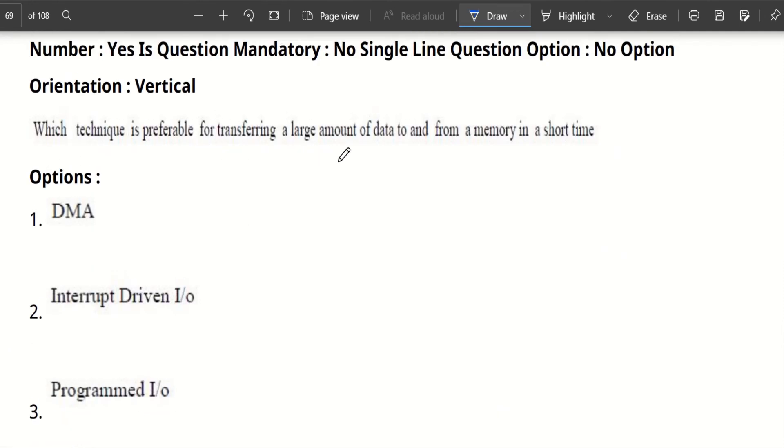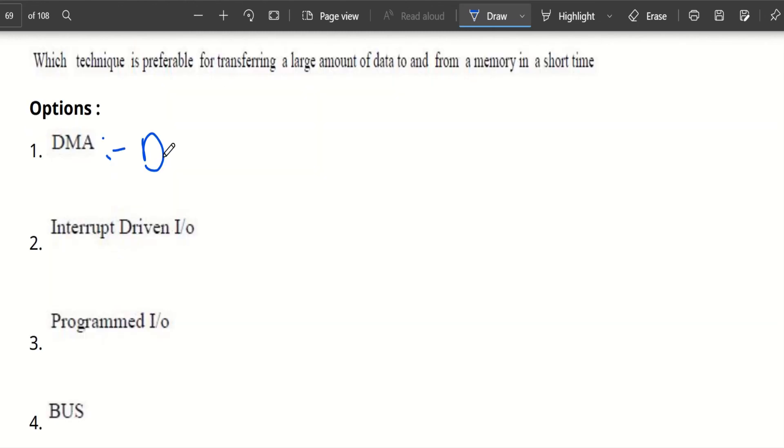Which technique is preferable for transferring a large amount of data to and from the memory in short time? DMA - Direct Memory Access is used for transferring the data within a short time. Any amount of data is used for transferring. DMA interrupts the CPU and transfers the data. Only DMA is used for transferring data within a very short time. A very similar question is also asked in GATE's paper also.